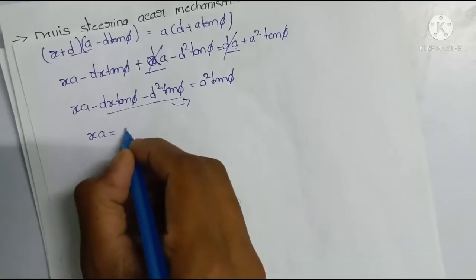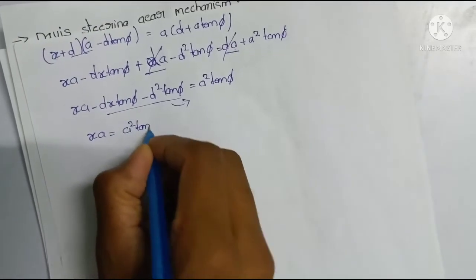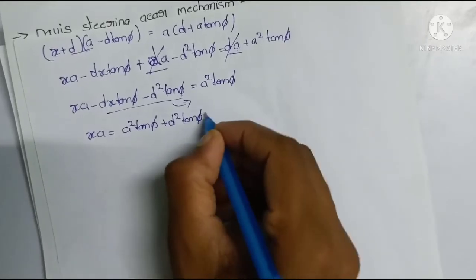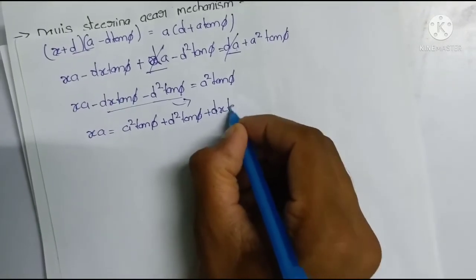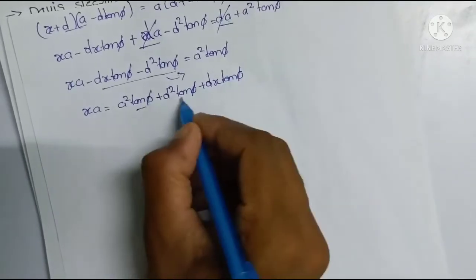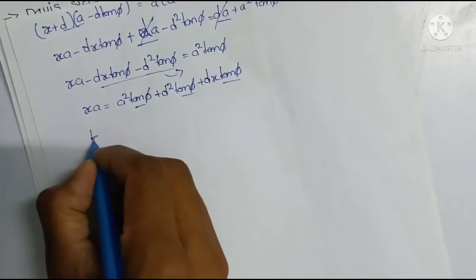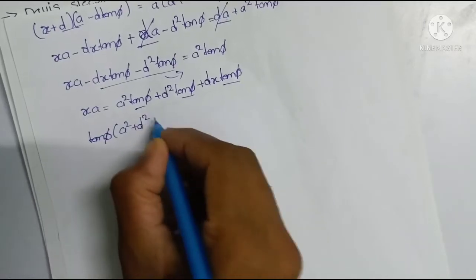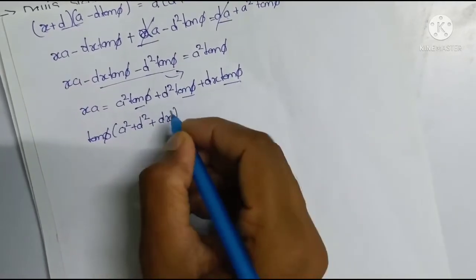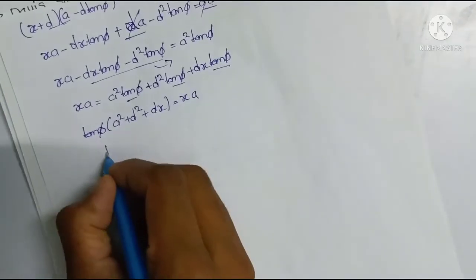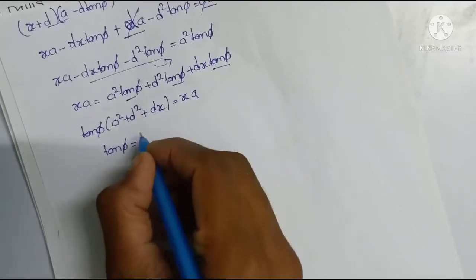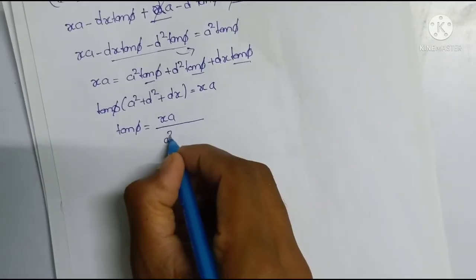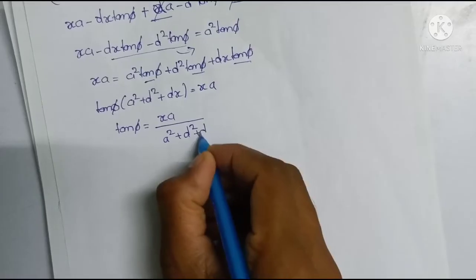x·A equals A squared·tan(φ) plus d squared·tan(φ) plus d·x·tan(φ). Taking tan(φ) common: x·A equals tan(φ) times (A squared plus d squared plus d·x). Therefore, tan(φ) = x·A divided by (A squared plus d squared plus d·x).